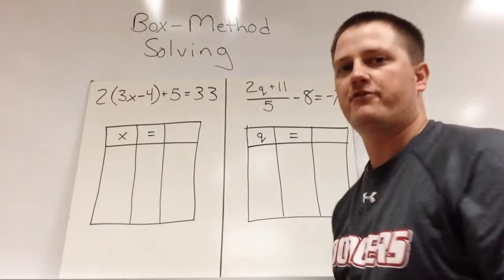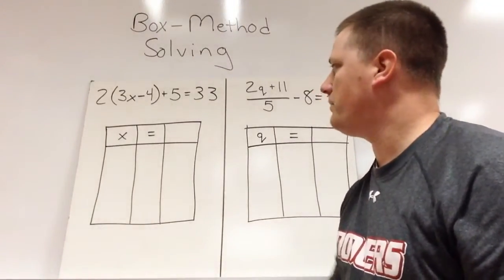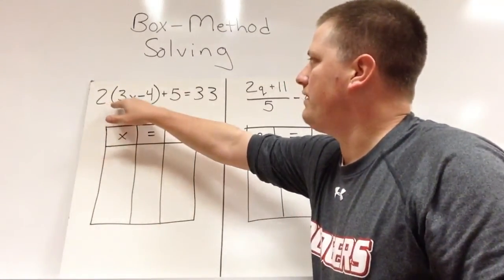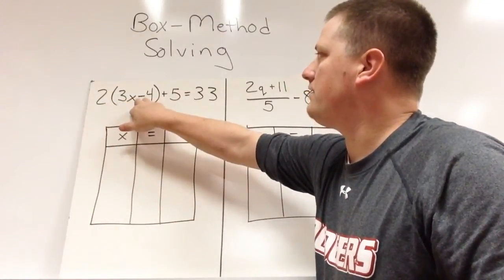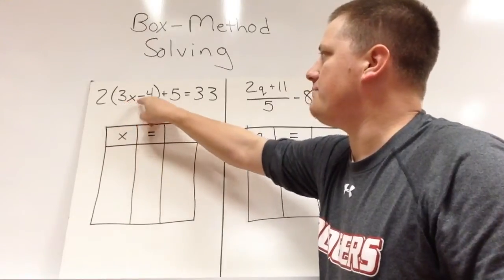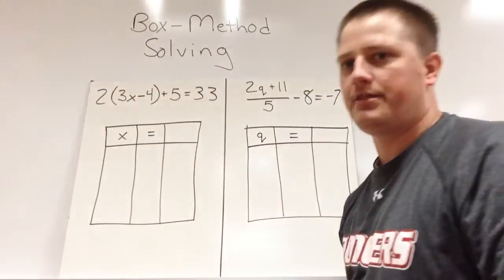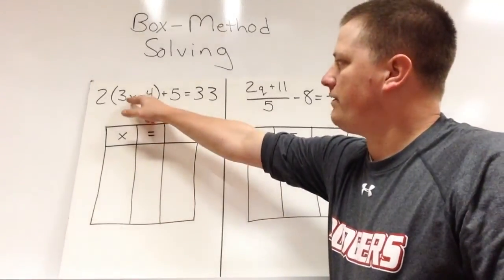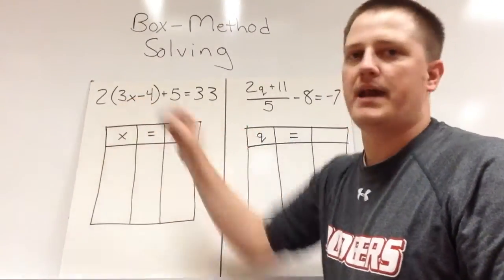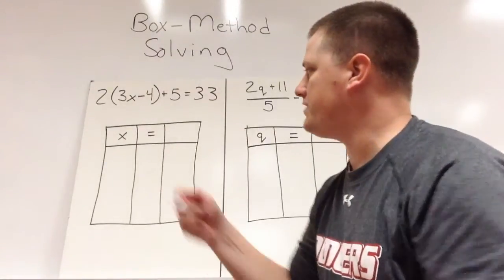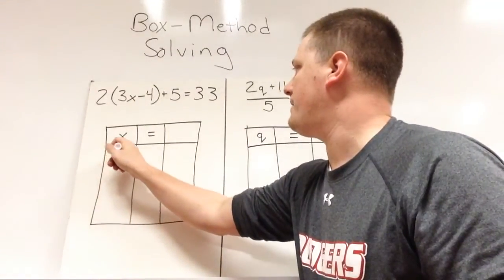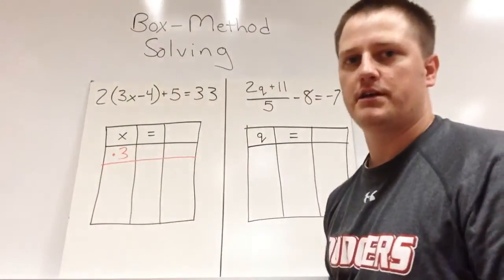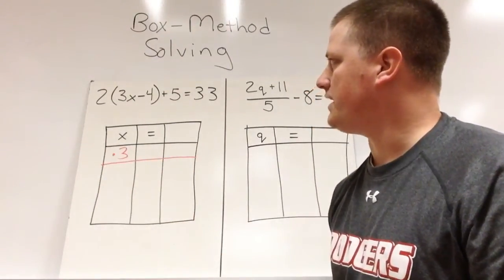So here I have two basic equations that we'll look at. We'll start here on the left. And we have two times the difference of three times x and four plus five equals thirty-three. Well, our first thing that we're doing to x, we want to focus on our variable. The first thing that we'd have to do to it, based off the order of operations, is we'd have to multiply by three. So that's going to be our first situation here.